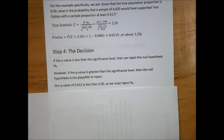Here's why we're going to reject the null hypothesis. In our decision step, step 4, we say that if the p-value is less than the significance level, then we reject the null hypothesis H0. However, if the p-value is greater than the significance level, then the null hypothesis is too plausible to reject. Our p-value of 0.012, or 1.2%, is less than 0.05, our level of significance, so we must reject the null hypothesis.